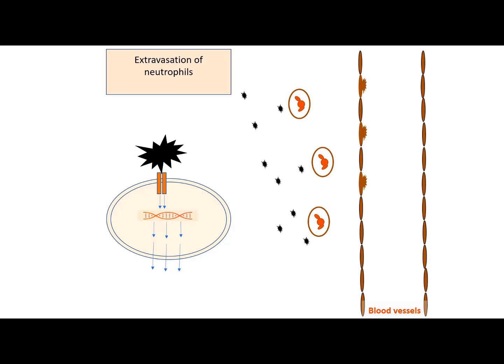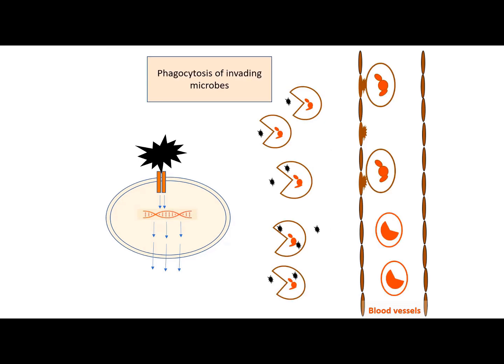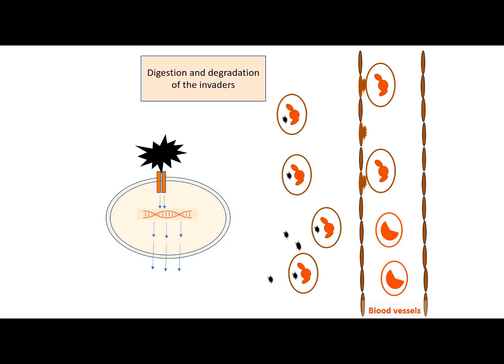Then, the extravascular neutrophils start to phagocytose the invading microbes. Then, they digest and degrade the invaders.